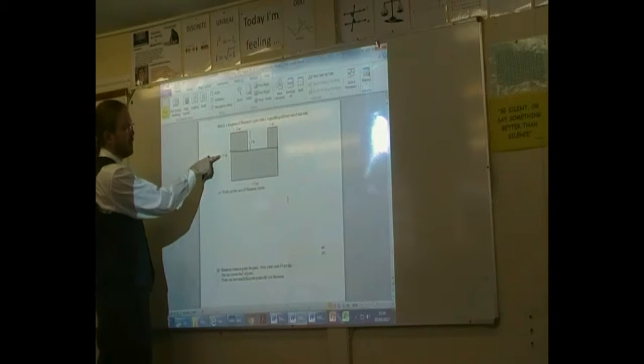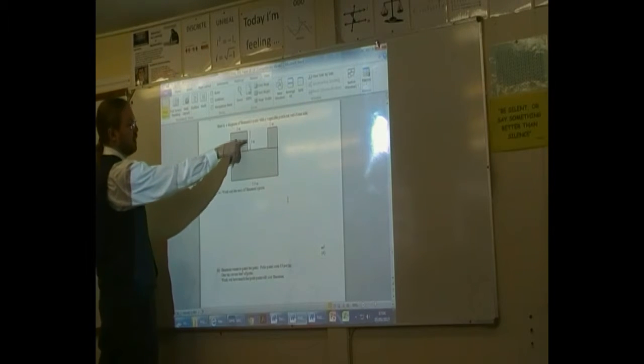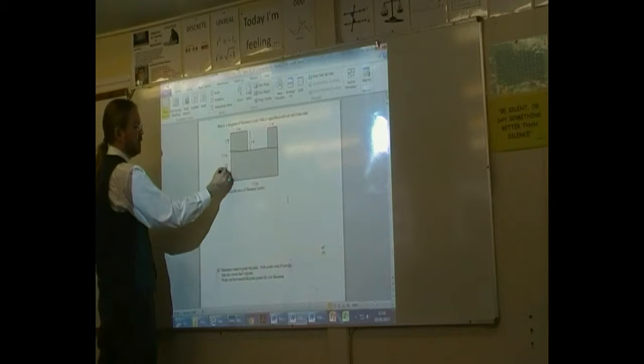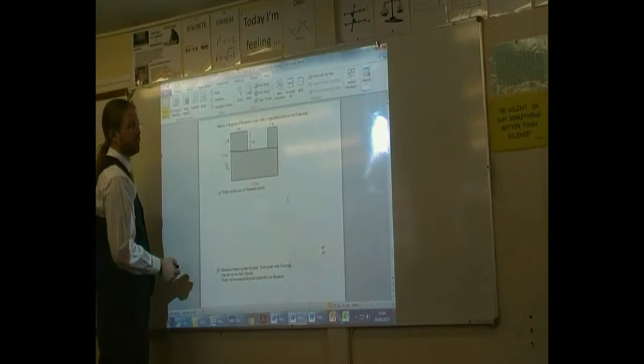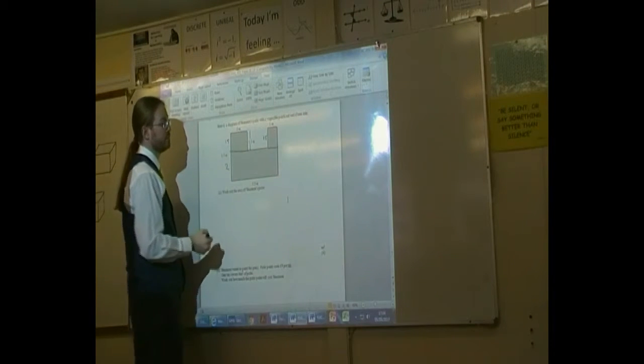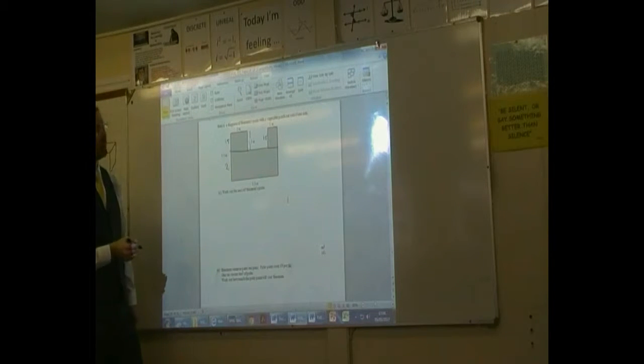I've split up my 3.5 here. I know that the height there is 1.5, so this bit must be 2. That's 1.5, so that must also be 1.5, and we've got the other thing that was on there.